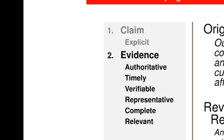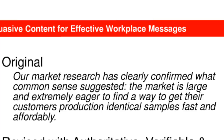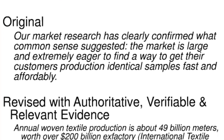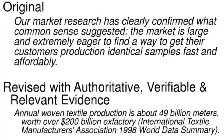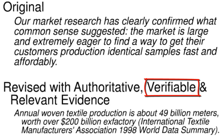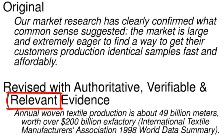The second element of persuasive content is evidence. The passage you're going to look at is a claim found in Fabrica's business plan, and I want you to consider how evidence could enhance its persuasiveness. If the writer adds the evidence shown here, the audience should be more willing to accept the claim because they've seen authoritative and verifiable evidence that the market is large. The evidence is authoritative because it comes from a reputable source with specific expertise in textile production, and verifiable because the audience could see it for themselves. Finally, the evidence is relevant because textile production is a reasonable way of measuring the size of the market.